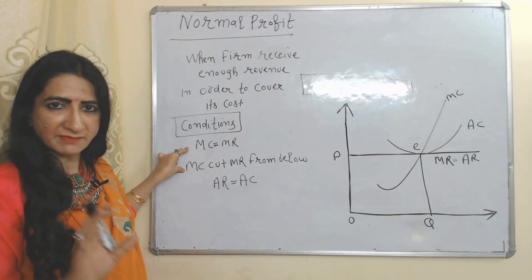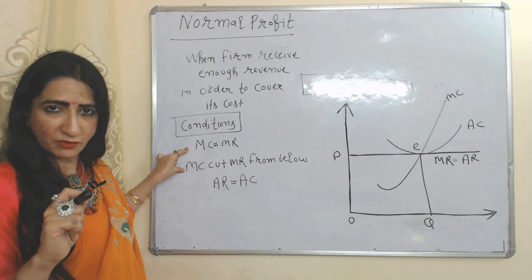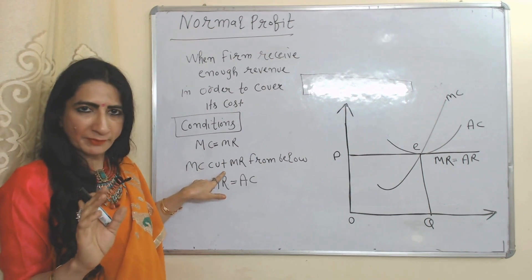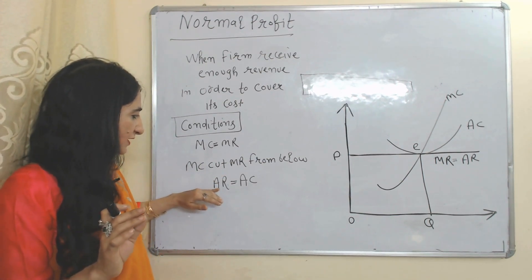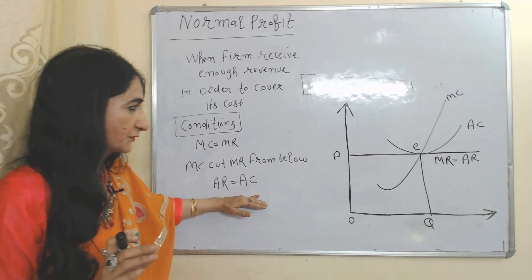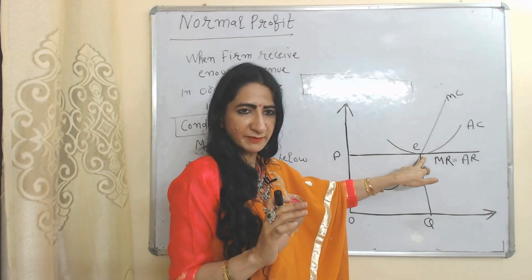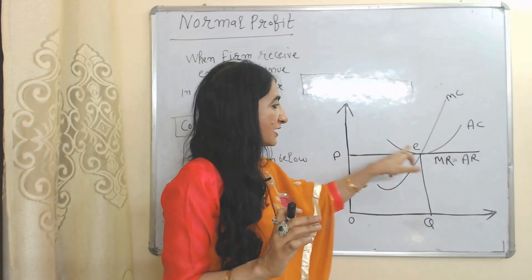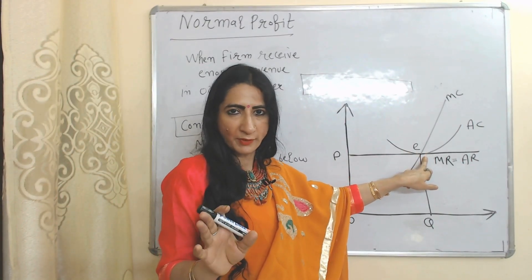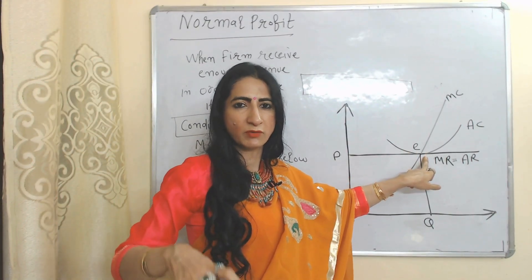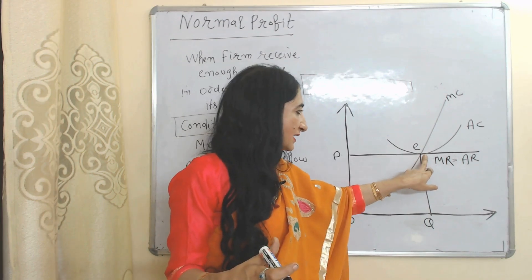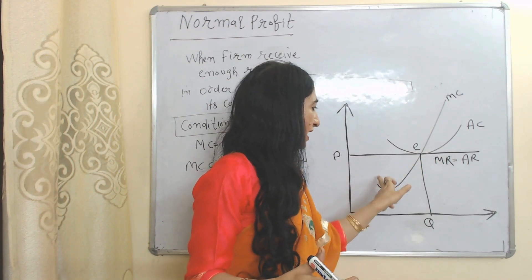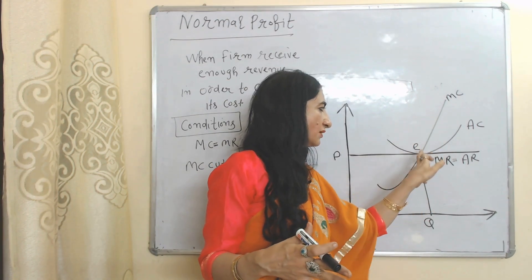Two conditions remain the same as earlier discussed in case of super normal profit: MC equal to MR, and MC cuts MR from below. But in case of normal profit, average revenue is equal to average cost. E point is the equilibrium point, OQ is equilibrium output, OP is equilibrium price. At E point the firm is receiving normal profit because all conditions are satisfied — MC equal to MR, and MC becomes equal to MR by cutting from below.